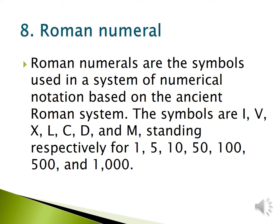Roman numerals are the symbols used in a system of numerical notation based on the ancient Roman system. The symbols are I, V, X, L, C, D, and M, standing respectively for 1, 5, 10, 50, 100, 500, and 1000.